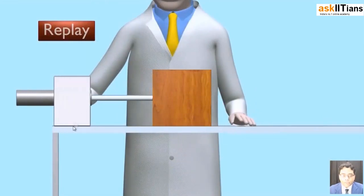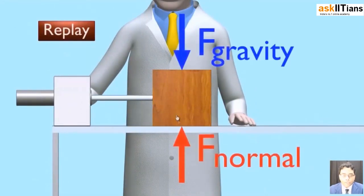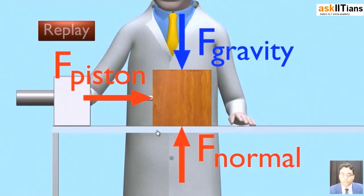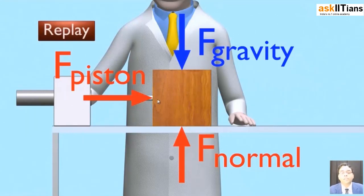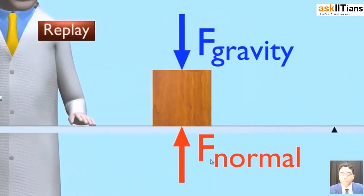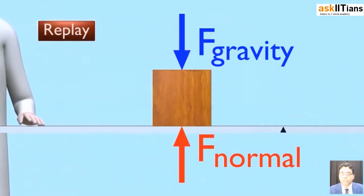We applied the force here. Even though the gravitational force and the normal force were acting, the piston applied this force on this mass, which resulted in the mass moving in the forward direction. This is an unbalanced force. Only under the existence of this unbalanced force did this object move. Here you can see all the forces — that was the free body diagram.